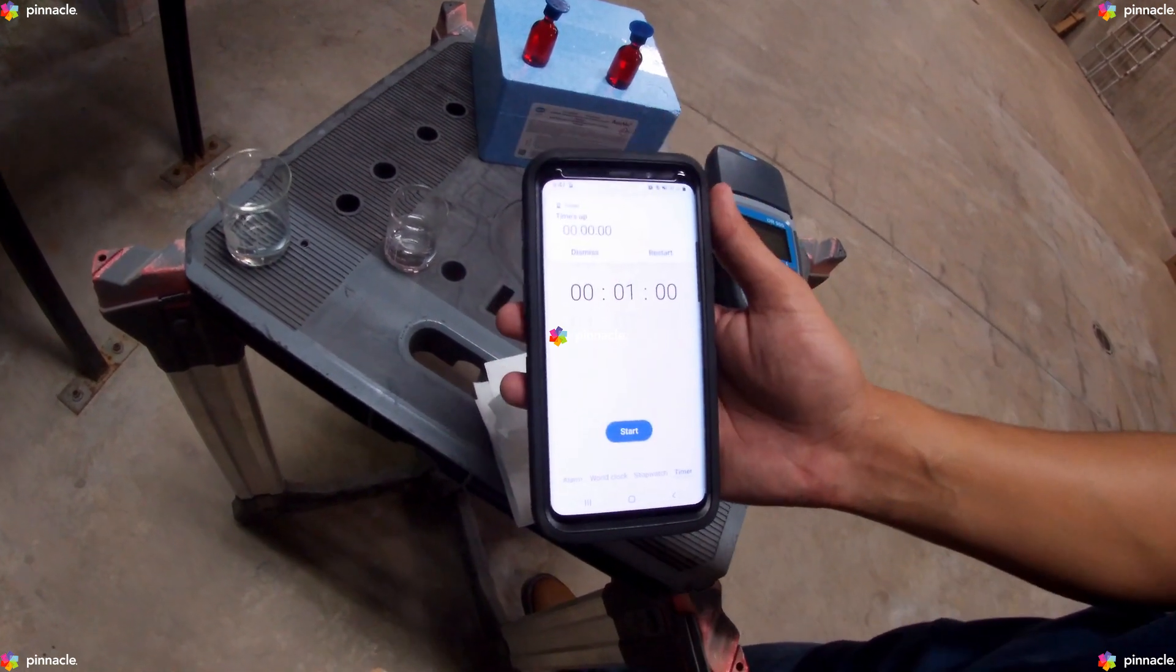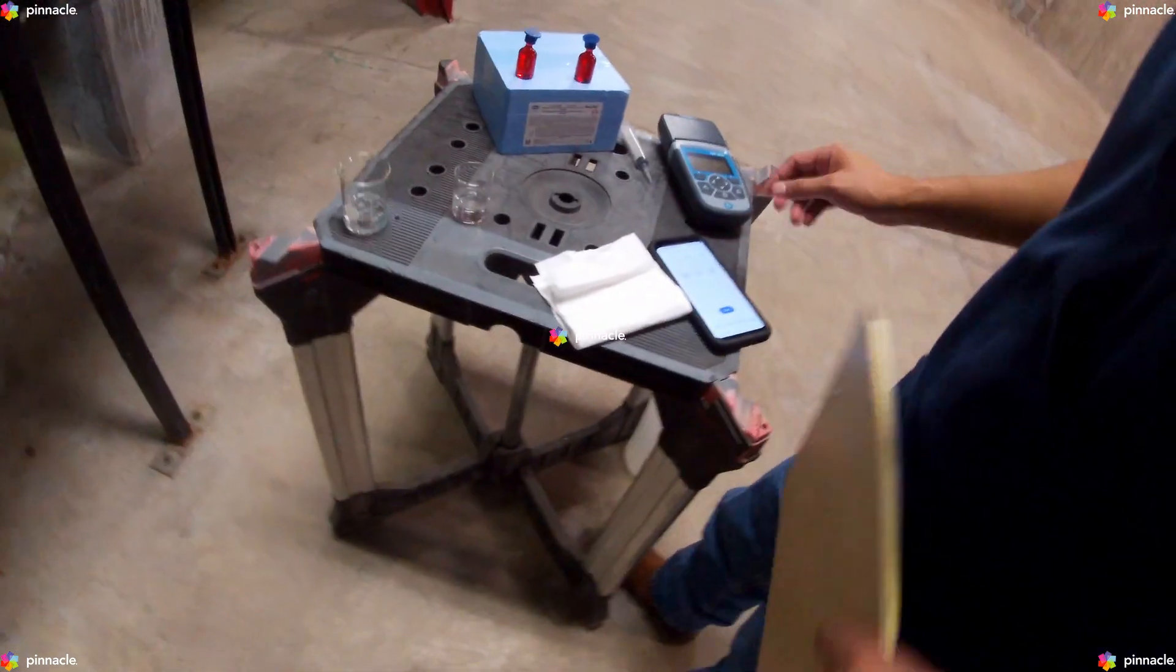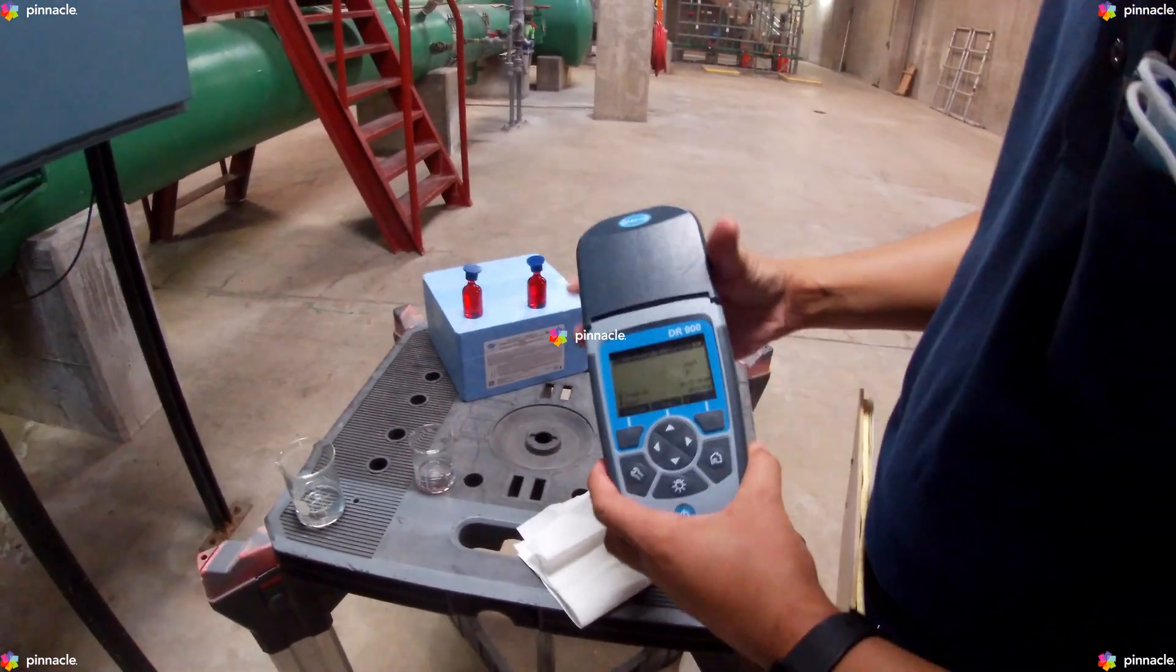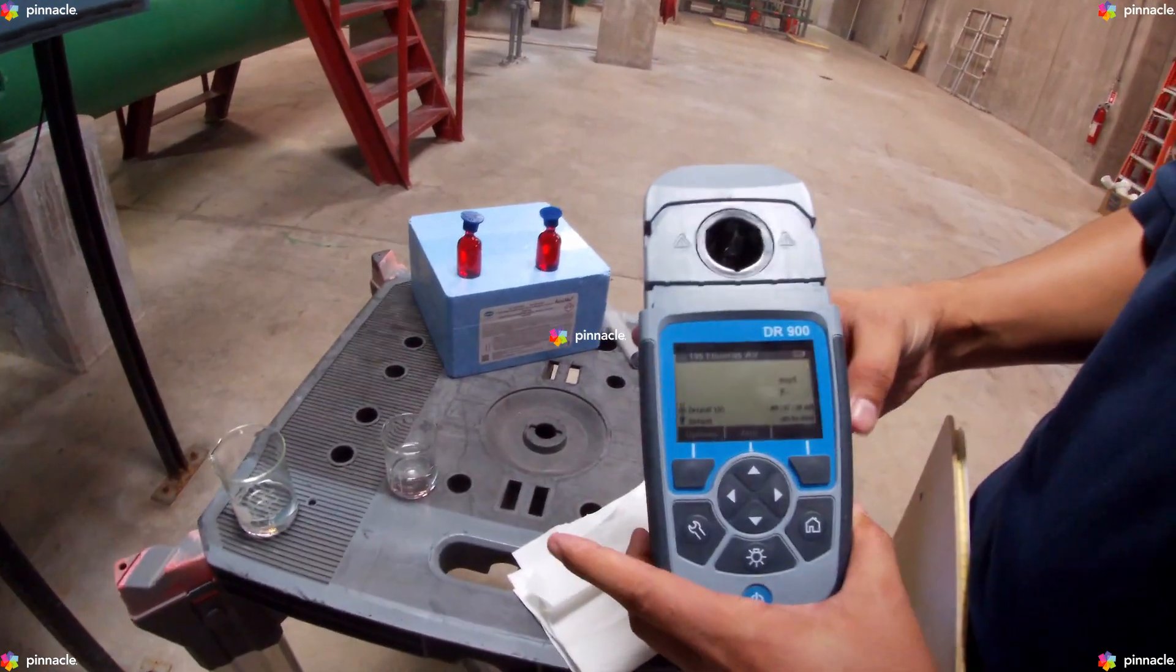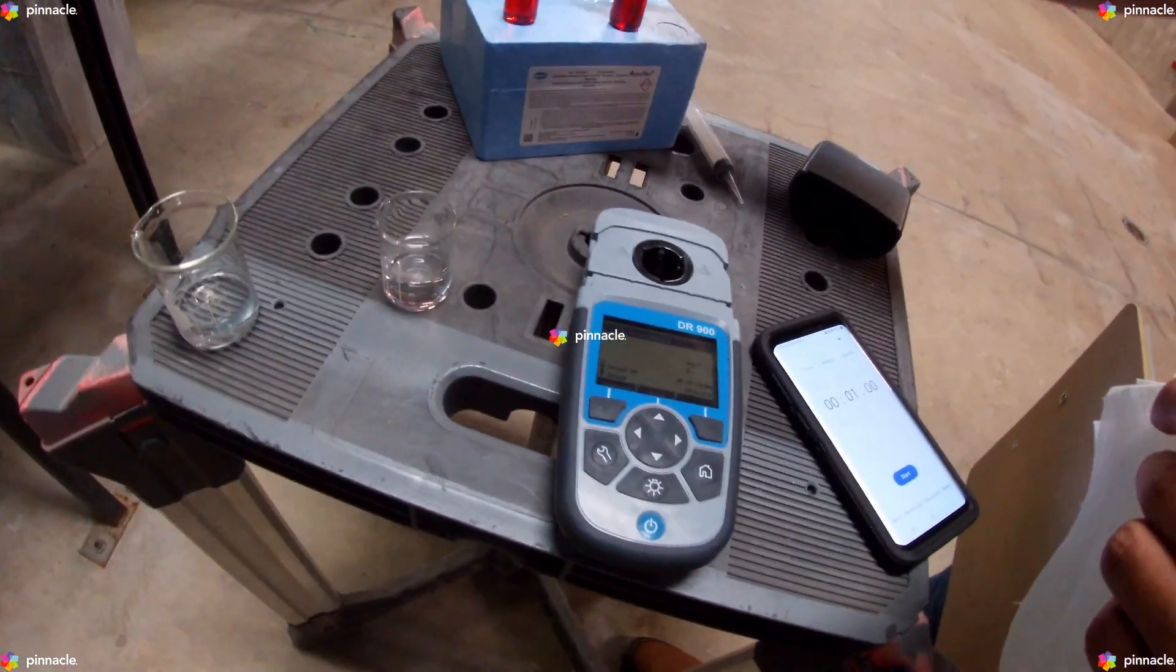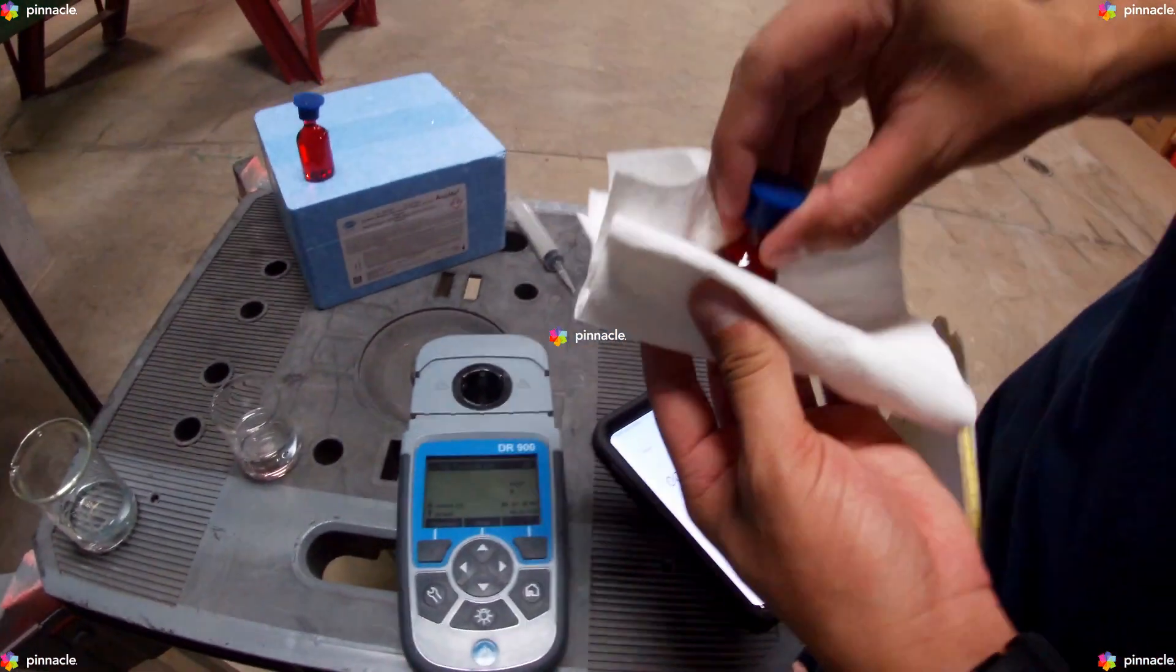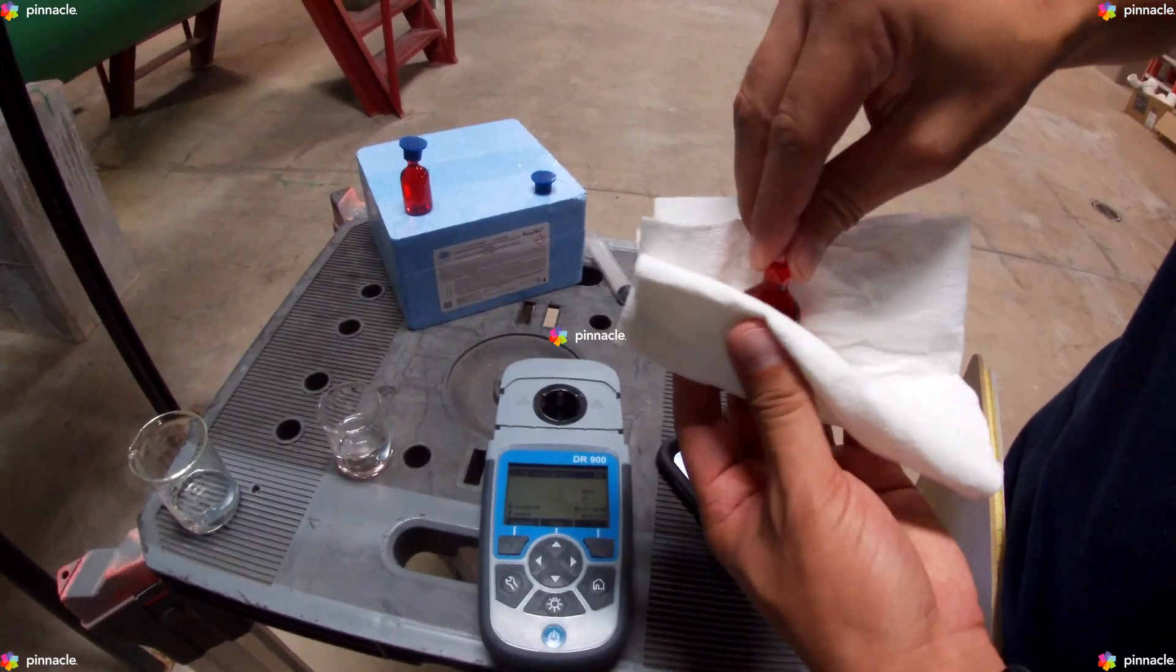When the timer expires, we will then grab our DR900 pocket colorimeter and make sure it is on. Next, we will grab our blank AccuVac Ampoule and clean it thoroughly.